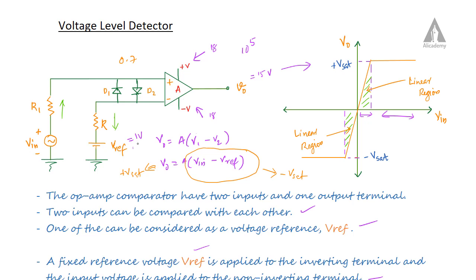In the voltage level detector, the reference voltage is used to detect a particular voltage level. With a 1 volt reference, when the input voltage exceeds 1 volt, the output changes. When the input voltage is greater than the reference, the output is positive Vsat; when less, the output switches to minus Vsat.